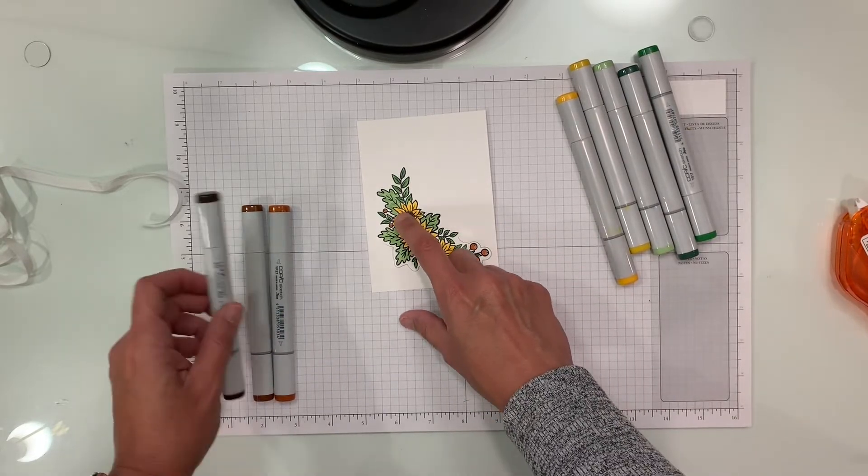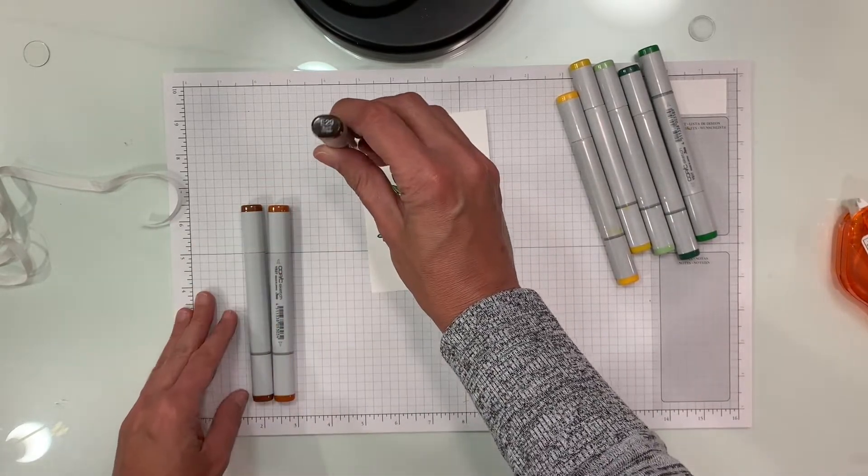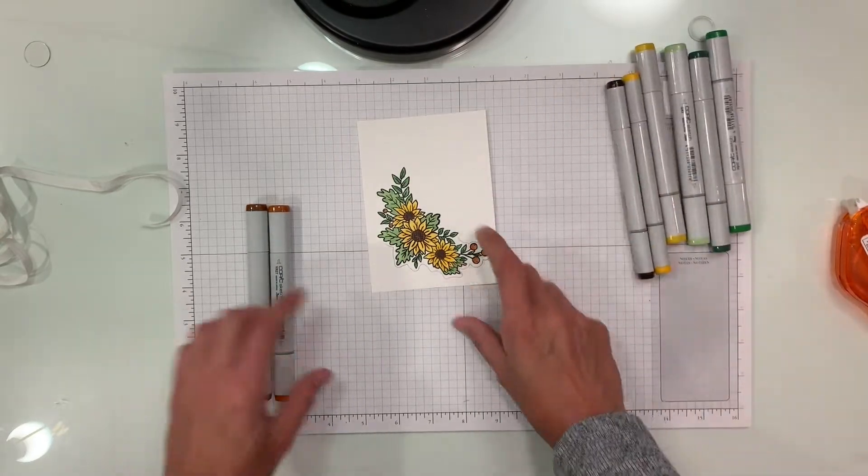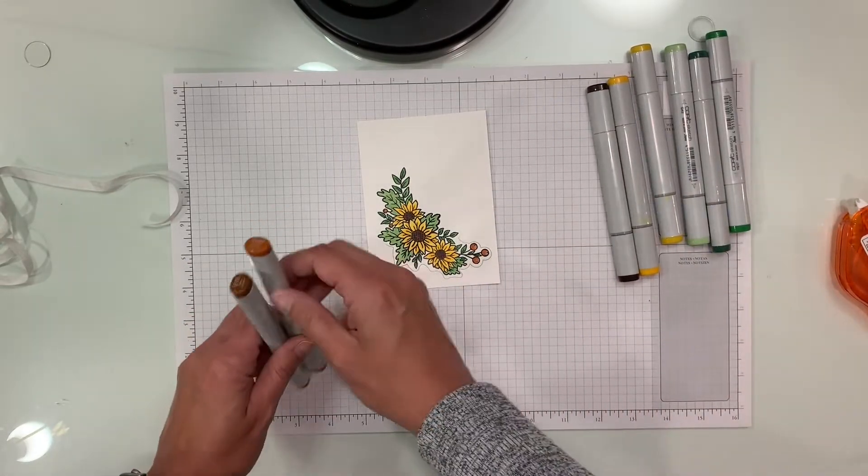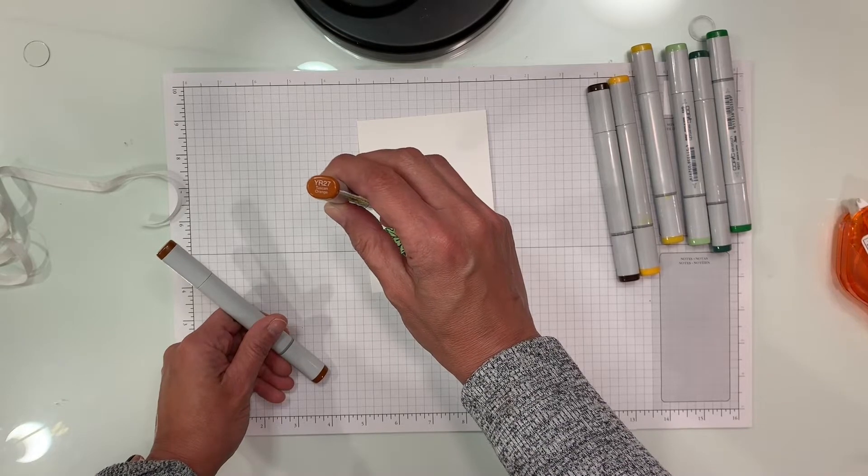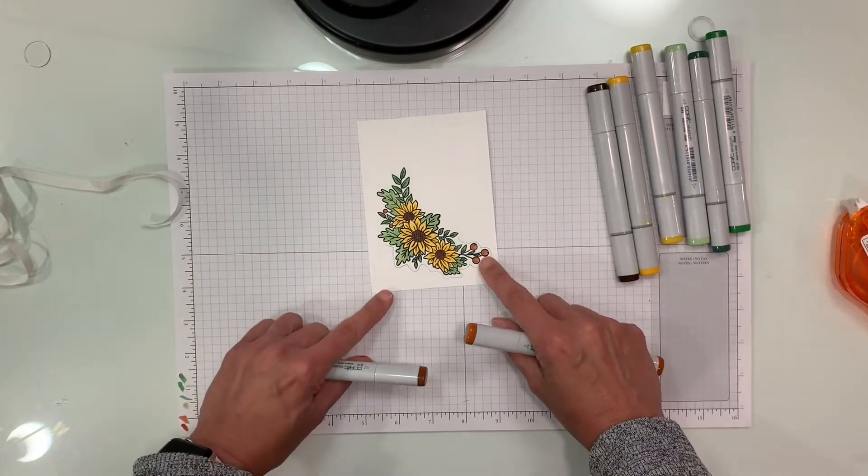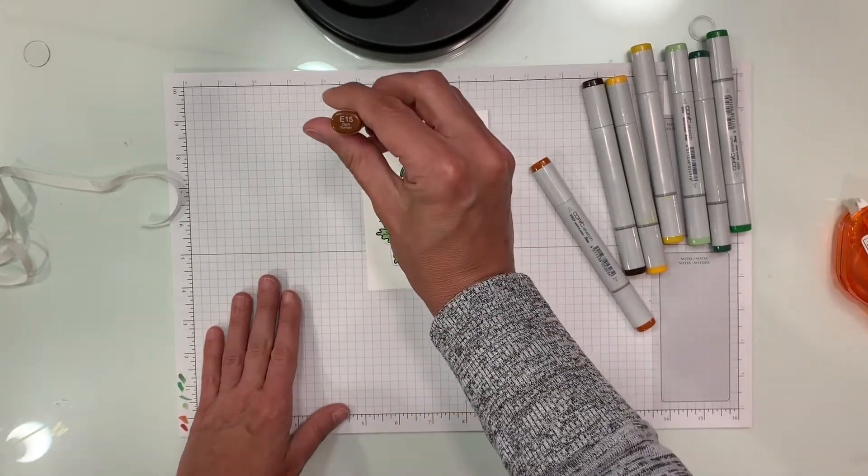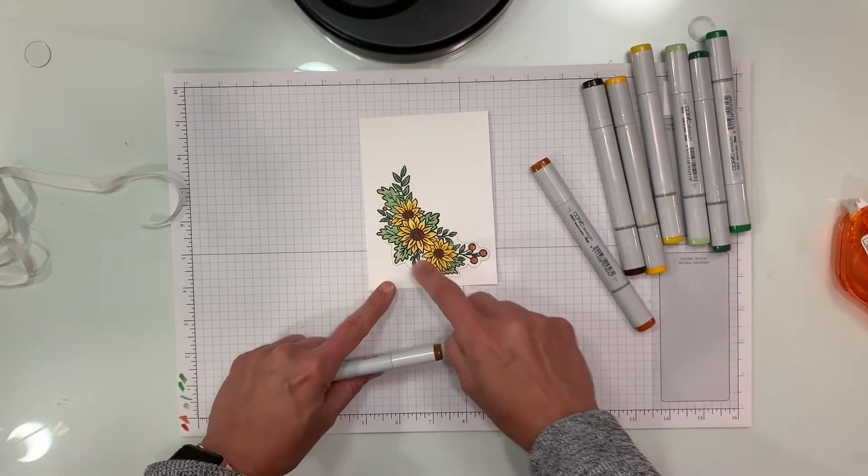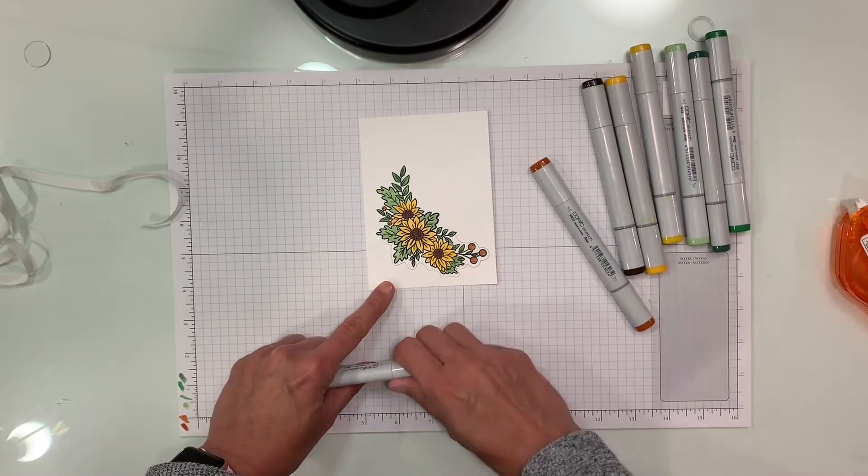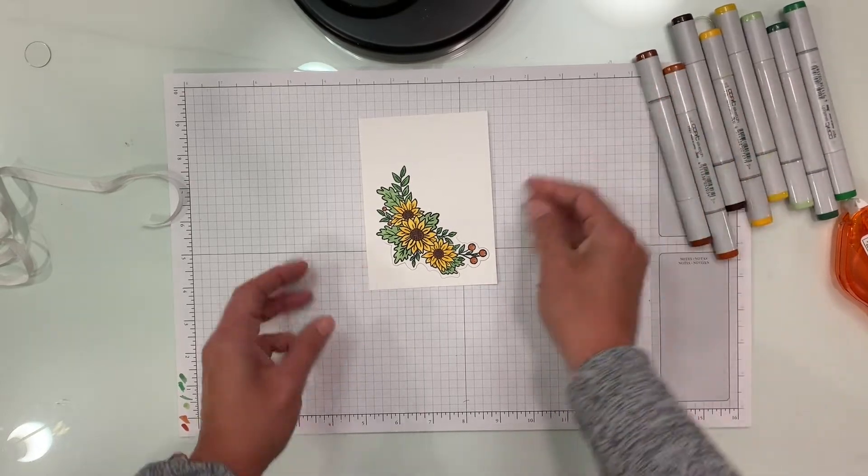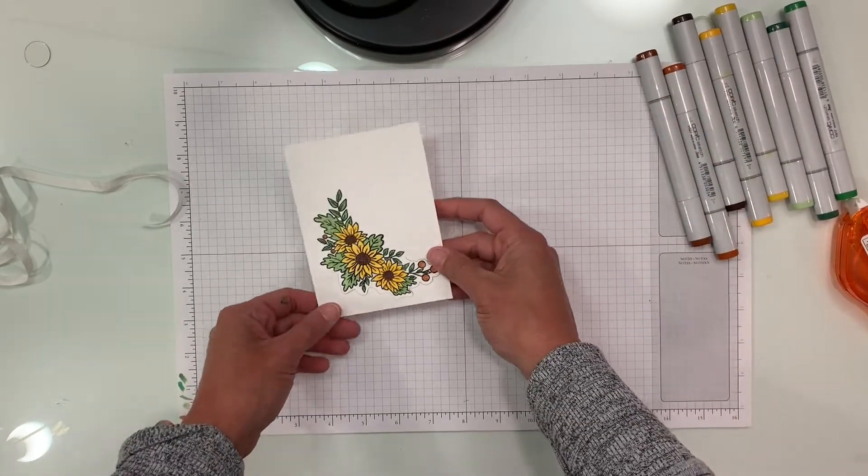For the center of the sunflower, I just colored it with E29 Burnt Umber. And then these berries are two-tone. They are colored with YR27 Tuscan Orange as the base and then with E15 Dark Suntan I added just a little highlight at the edge of the berries. So it's all colored and we're ready to finish up the card.